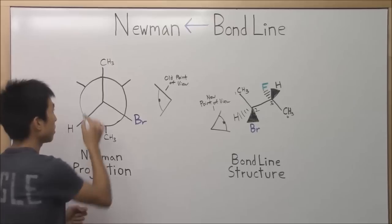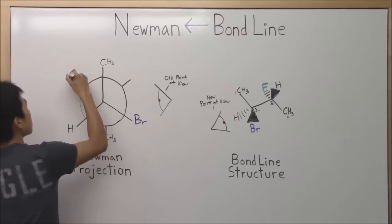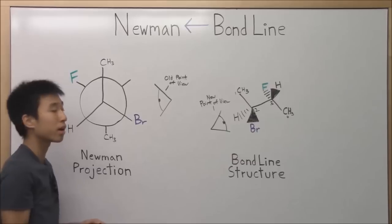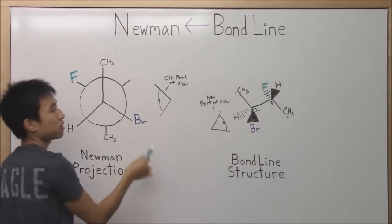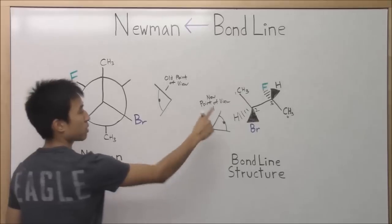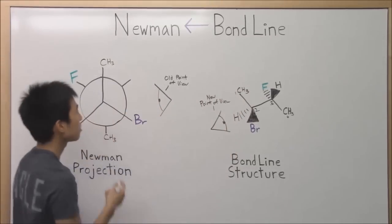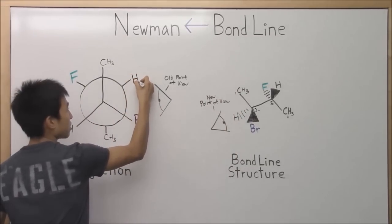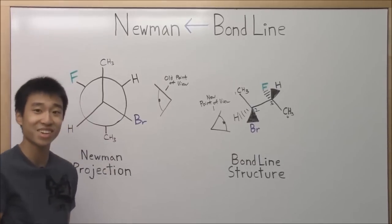So fluorine is going to be here in the back. So it actually makes sense that it's dashed and going away from our eye. It's farther away from our old point of view. And hydrogen was coming towards our eye in the bond line structure. So we're going to have it come towards our eye in the Newman projection. And there you go.